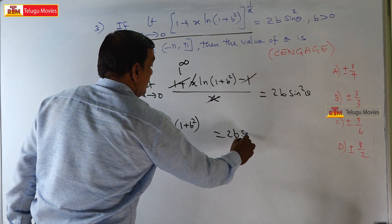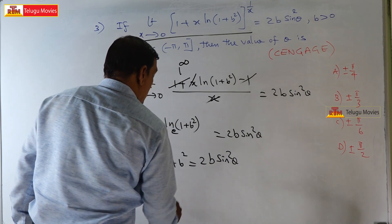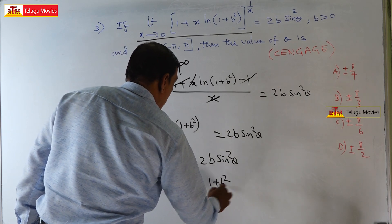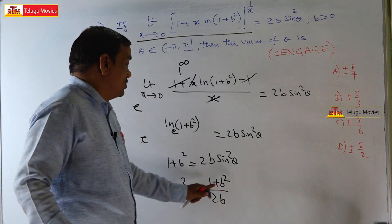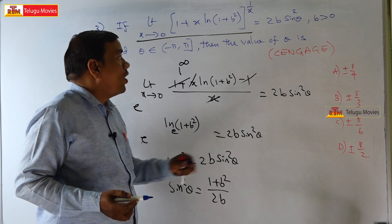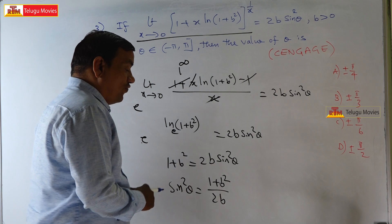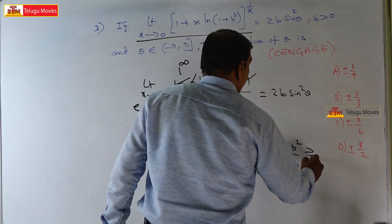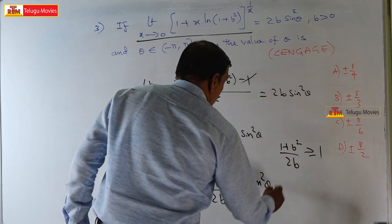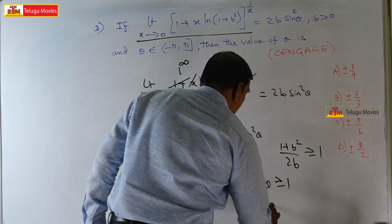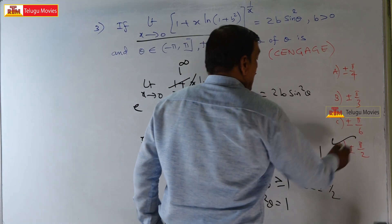Therefore sin²θ = (1+b²)/(2b). Since b > 0, both b² and 2b are positive, making this a positive quantity. Now (1+b²)/(2b) is always greater than or equal to 1 by AM-GM inequality. Since sin²θ ≤ 1 always, the only possibility is sin²θ = 1, giving θ = ±π/2. Therefore option D is the correct answer.